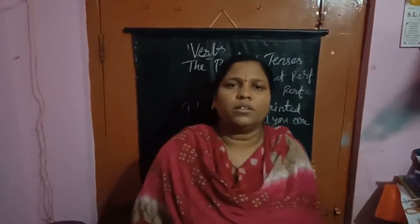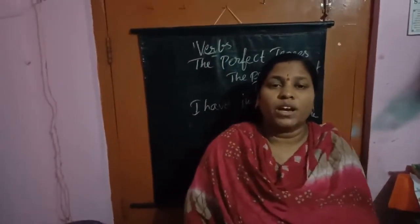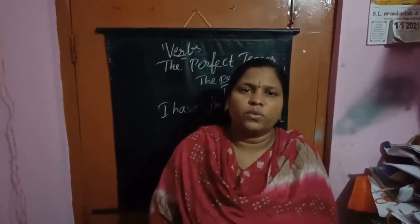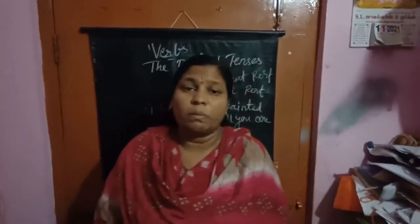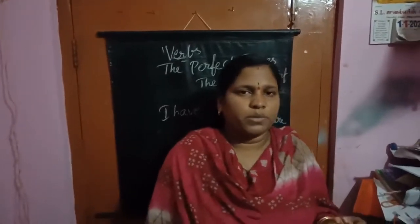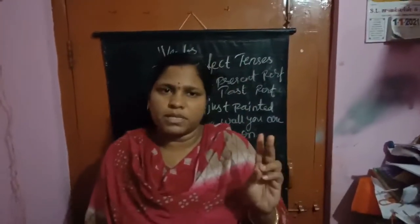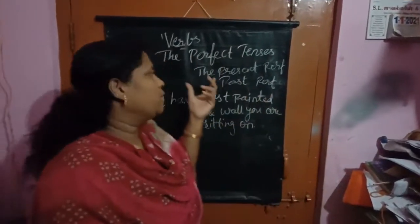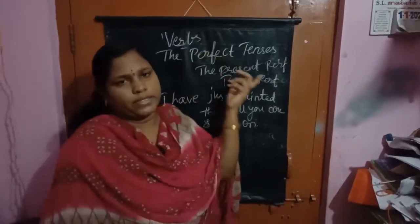Hi children, good morning to everyone. What we are discussing, children? We are discussing about the verb forms. Today we have completed past continuous, present continuous, future continuous. Verb forms we have done: simple past, simple present, simple future, past continuous, present continuous, future continuous. We have completed those. Now we are going to learn about the perfect tenses.